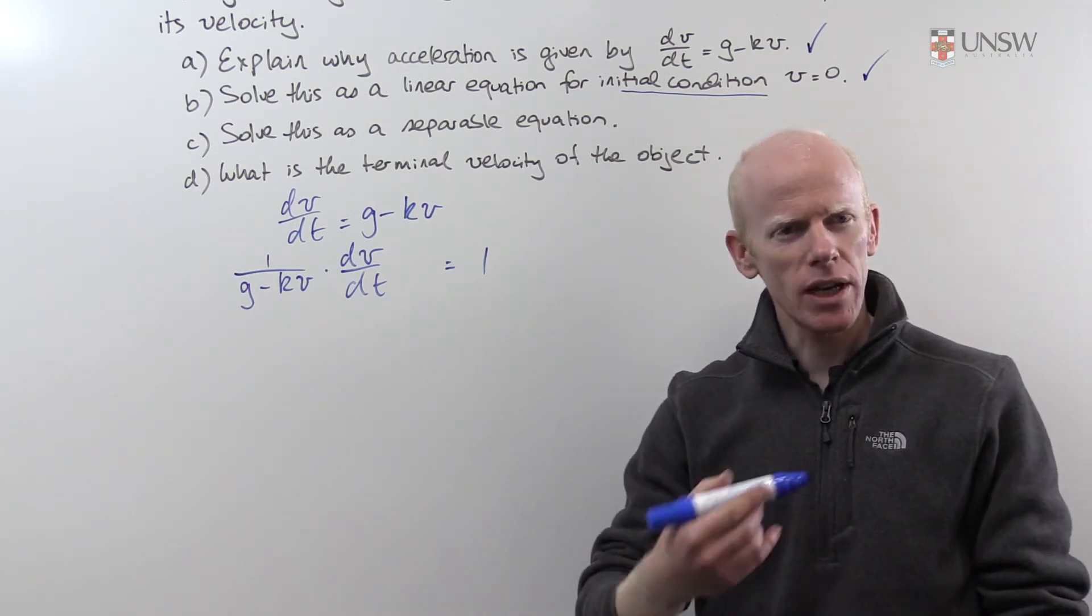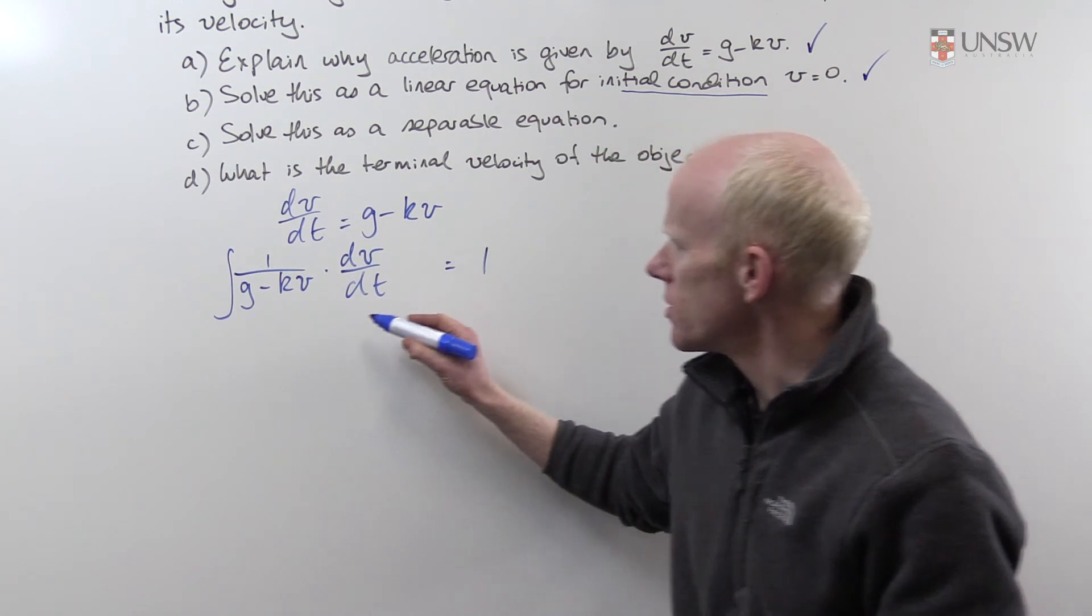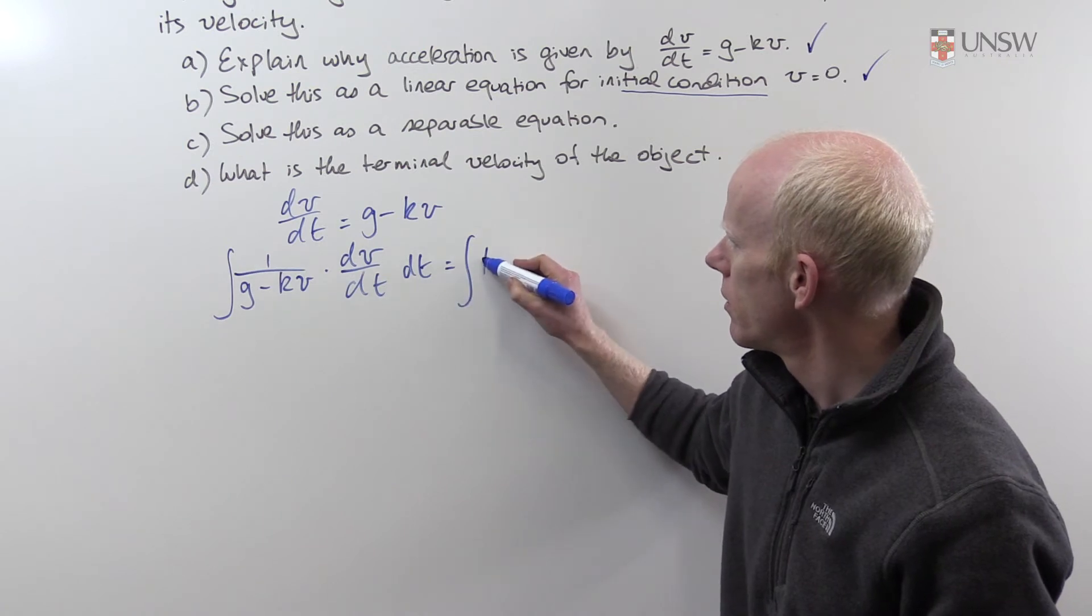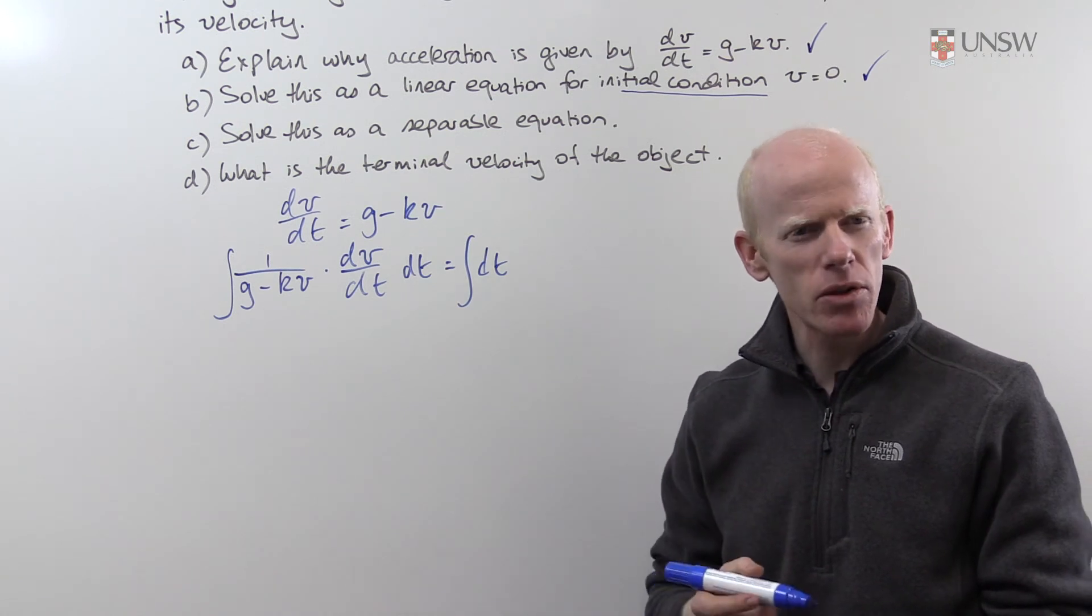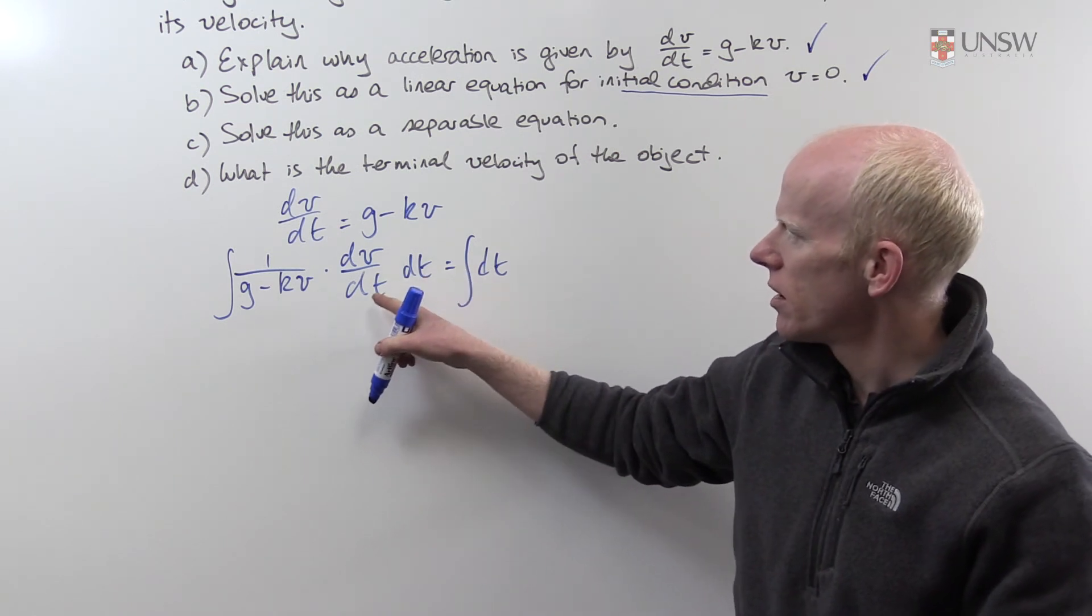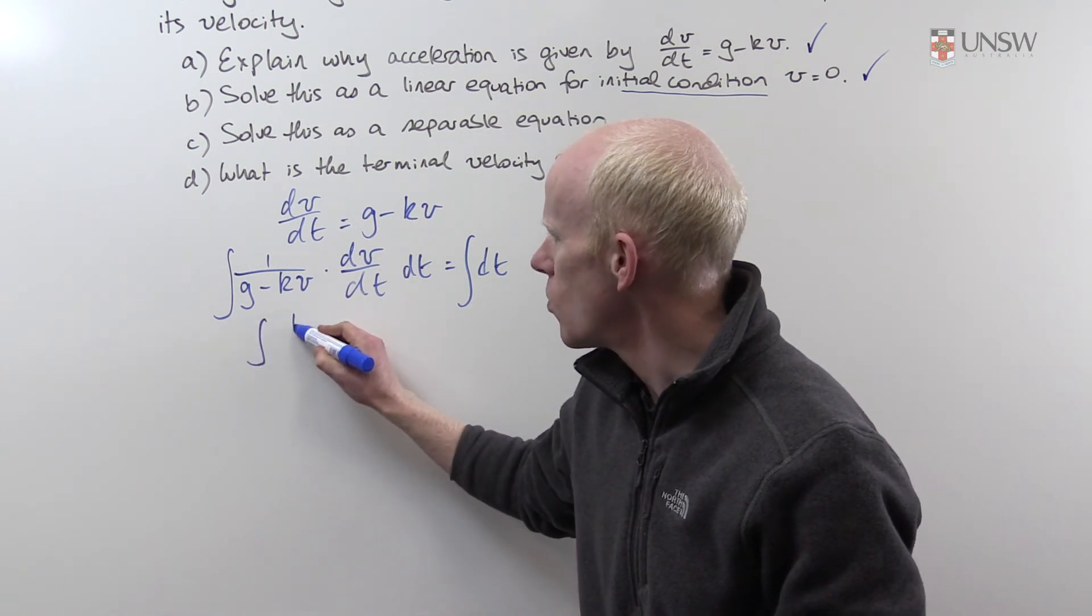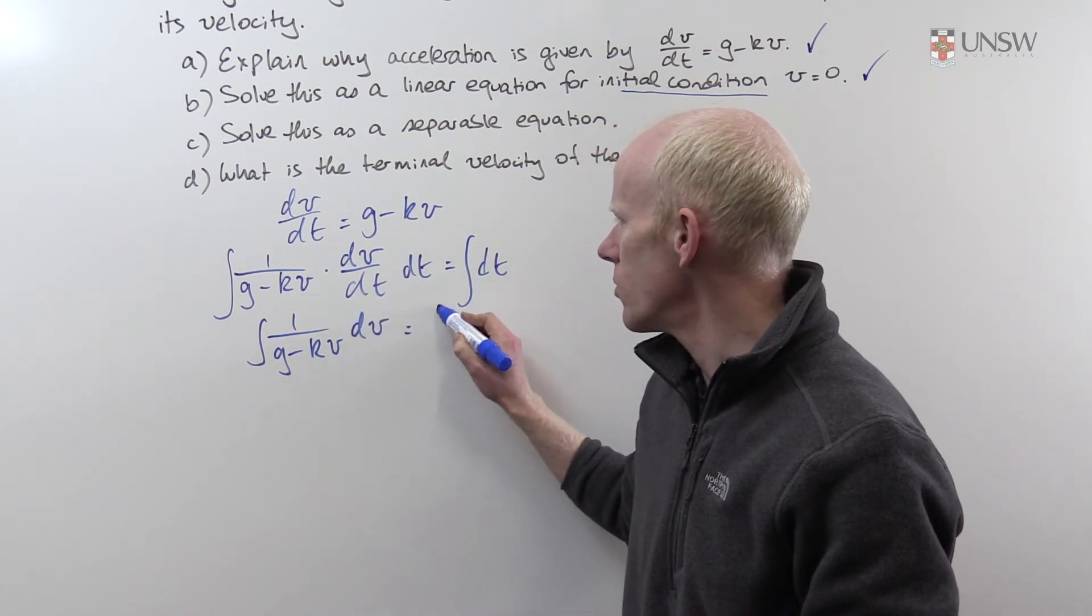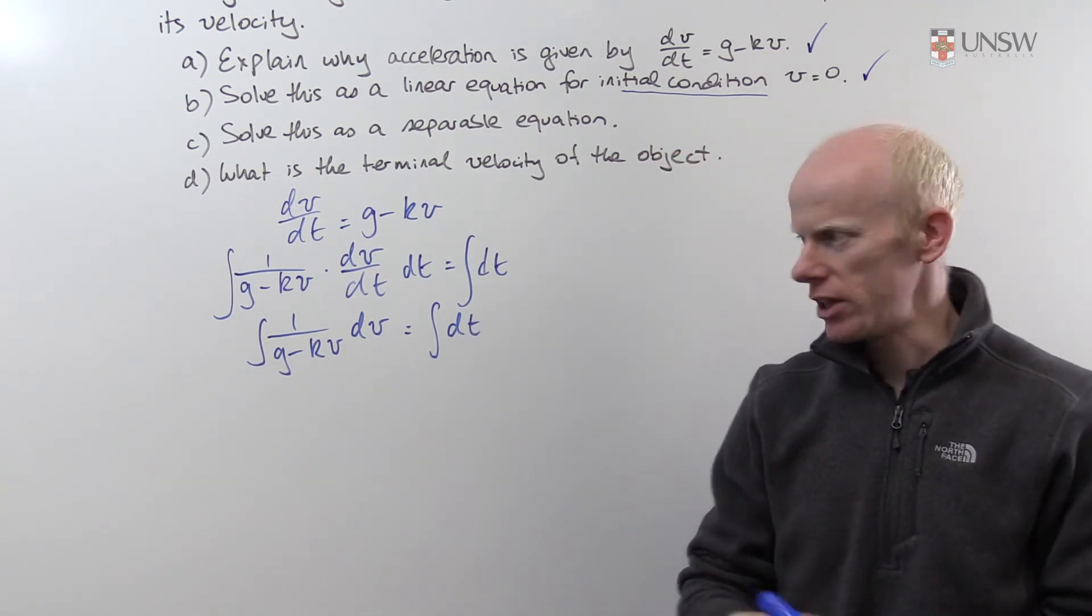What do I do now? I'm going to integrate both sides with respect to t. I've left myself a little bit of space here for a dt. So I now have this expression. I've done the same things to both sides, integrating with respect to t. You'll see that the dt here cancels with this dt here. So I'm going to rewrite this as 1 over (g minus kv) dv equals the integral of 1 with respect to t. And now we'll go and integrate.